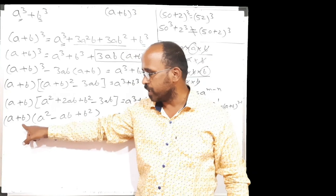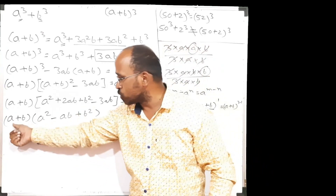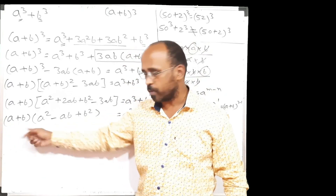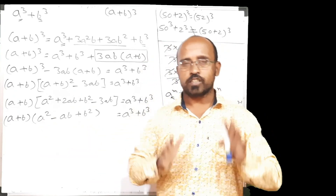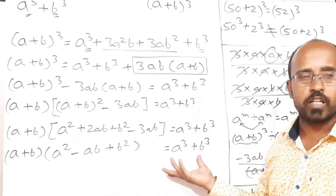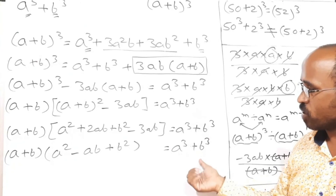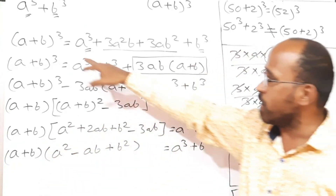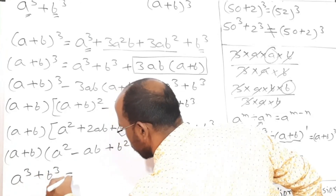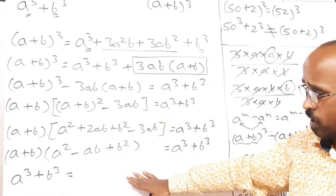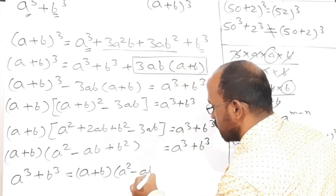Now addition and subtraction of any term in the first bracket and second bracket is not possible. Applying BODMAS is not possible. Taking common between these two brackets is also not possible. Here is a plus b in the first bracket; in the second bracket there is a square minus ab plus b square. So all of the terms are unlike, hence it is our final answer. We are looking for the formula of a cube plus b cube, which we found. So let's write it in the formula style — write the formula on the left hand side and expansion on the right hand side. A cube plus b cube equals a plus b into a square minus ab plus b square.